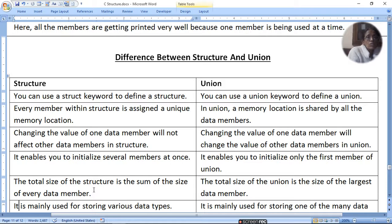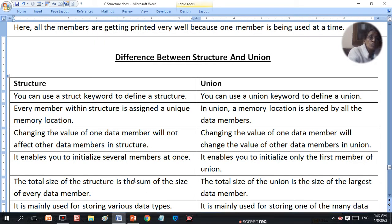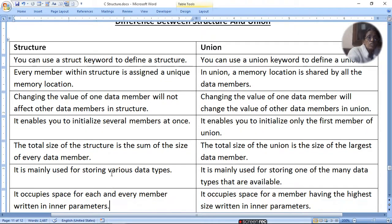Changing the value of one data member will not affect other data members in a structure. But changing the value of one data member in a union will change the value of other data members. Structure enables you to initialize several members at once. Union enables you to initialize only the first member.